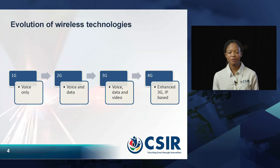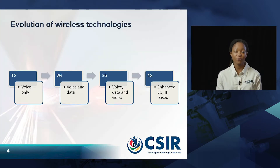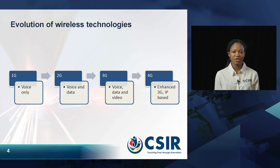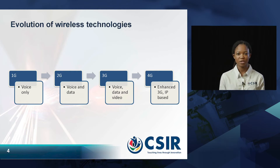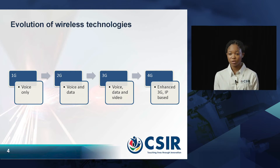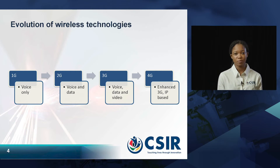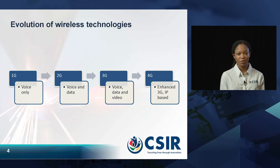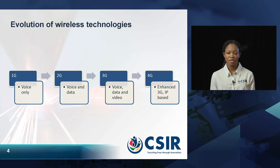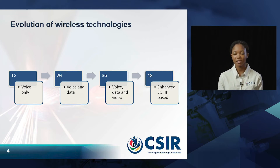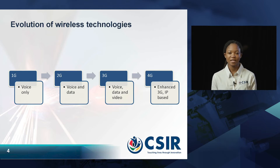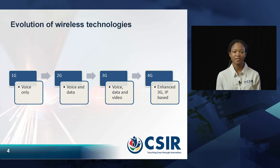We begin with an overview of the evolution of wireless technologies. Initially we had the first generation, 1G, which only allowed voice calls. Then 2G enabled data capabilities, and we were able to view videos with the third generation. Finally, the current 4G, which is IP-based, provides higher data rates than 3G.